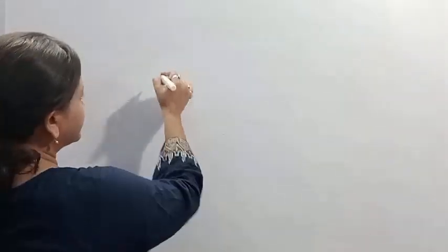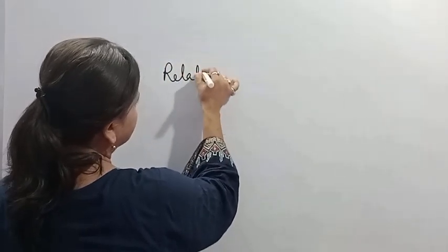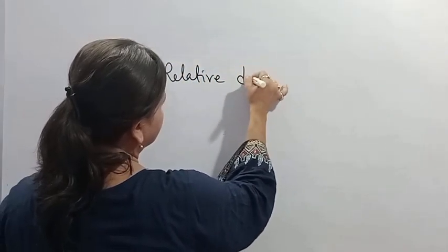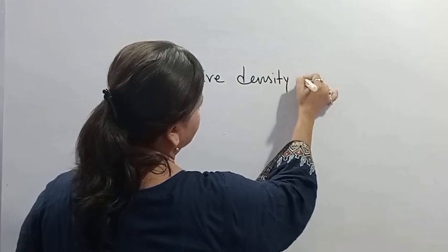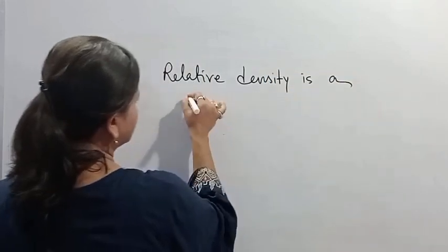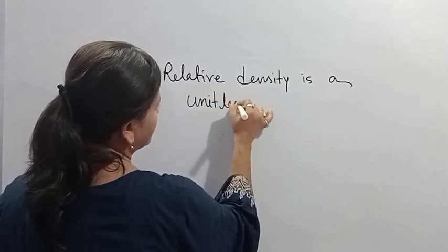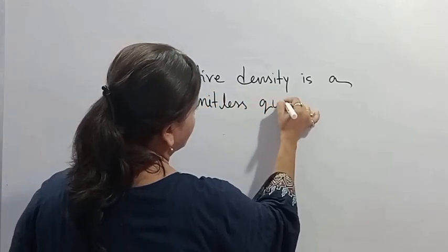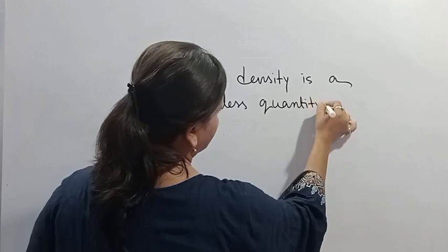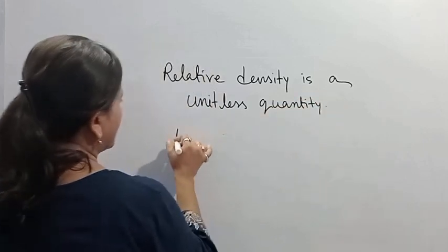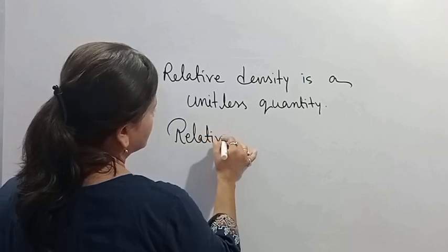Relative density is a unitless quantity. It is also called specific gravity.